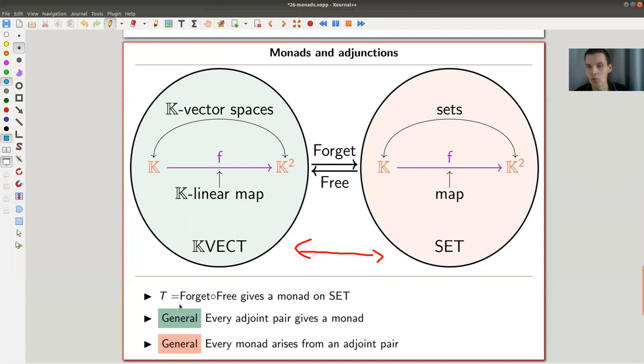Like from vector spaces to sets, the forget-free adjunction, forget and free, then doing it in the correct order gives you a monad here. So if you go this way, free and then forget, then you get an endofunctor of set, and that's your endofunctor T. And it turns out that this is a shadow of the adjunction. So the monad actually arises from this adjunction. And it's true that, in a certain sense, every monad actually arises from an adjunct pair.